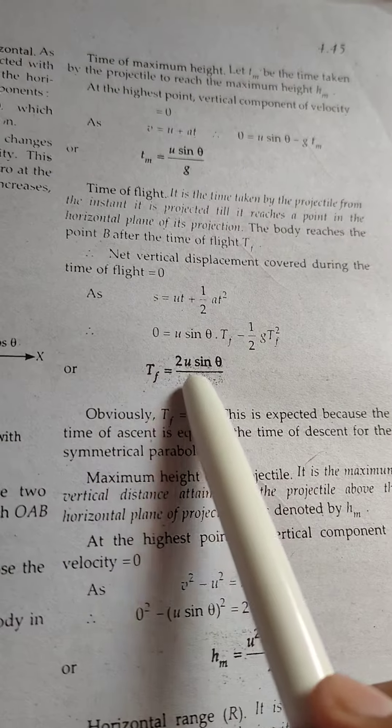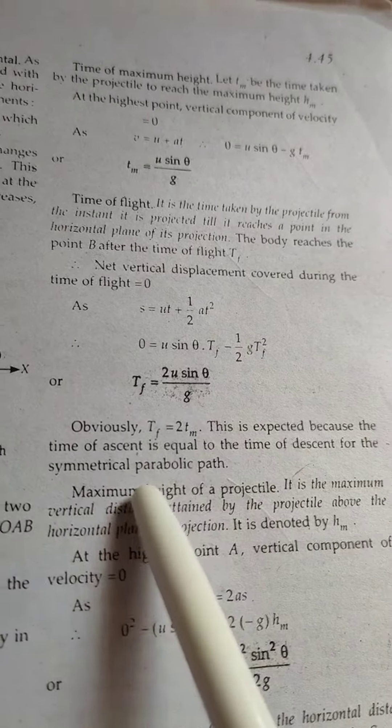So time of flight T_f is equal to 2u sin θ upon g. Now next, maximum height of projectile.